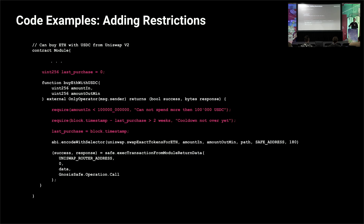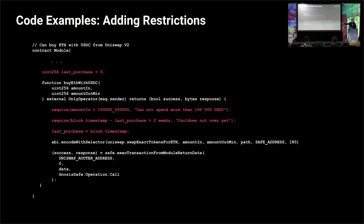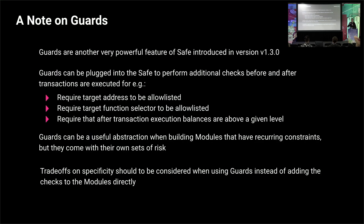We can automate very specific actions that you would otherwise have to execute manually. Especially when you need to do swaps out of a Safe, it's kind of a hassle because you have timelines and slippage protection — if the signers take five hours to sign, the transaction probably fails. We have modules for swapping, for bridging, and for all sorts of actions. Through writing modifiers and putting restrictions on who can call what, you can narrow down the scope of the module a lot, giving you a very safe way to automate things. Guards are another Safe feature — they get checked before and after every transaction. Instead of doing all of these custom restrictions in the module itself, you could have one abstract generalized guard. You could add a list of allowed operators and specify which function selectors are allowed. Guards and modules go hand in hand and are very strong together.